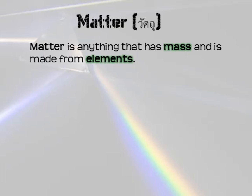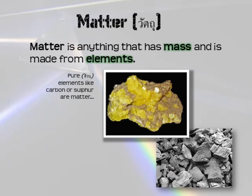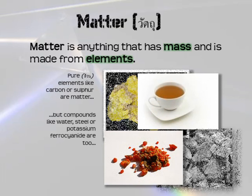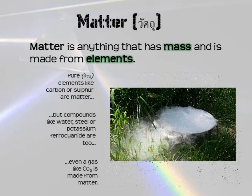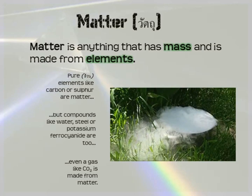Matter is anything that has mass and is made from elements — in fact it can be even smaller than elements. Usually when we talk about matter, we mean something made from elements. You can have pure elements like carbon or sulfur, compounds like water or steel or potassium ferrocyanide, and even a gas like carbon dioxide — all made from matter. So that's the end of this part. Thank you for watching, and I hope you found it useful. Bye bye for now.